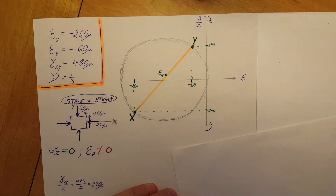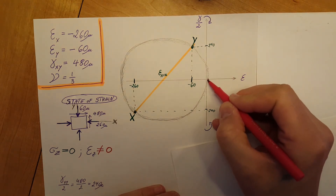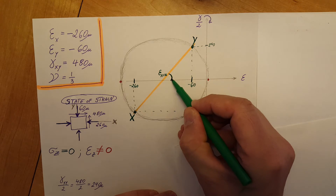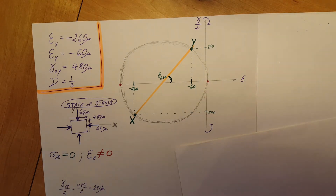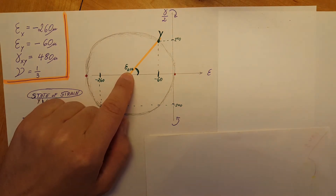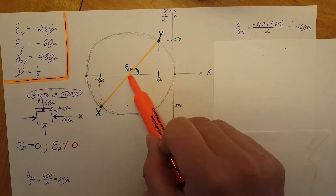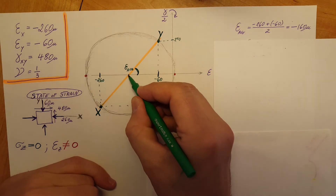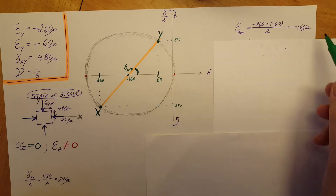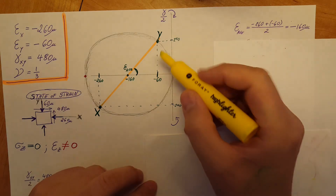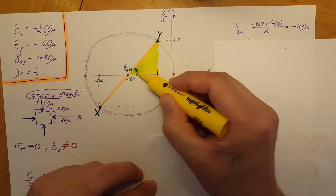They are asking us to find the orientation and magnitude of the principal strains. These will be at the two tips of the circle — points A and B — which we need to calculate: both the degree of orientation and their magnitudes. First, I want to find epsilon average. Normal strain average equals this plus this divided by two, giving us a value of negative 160 microns. These are all in microns.